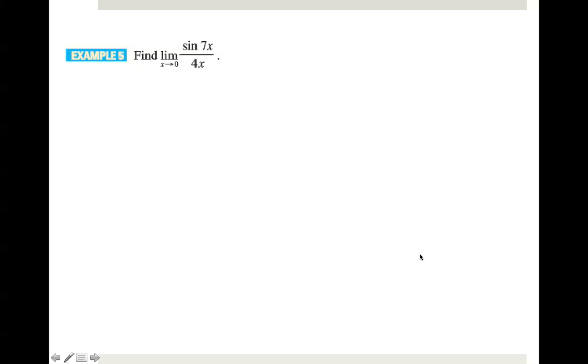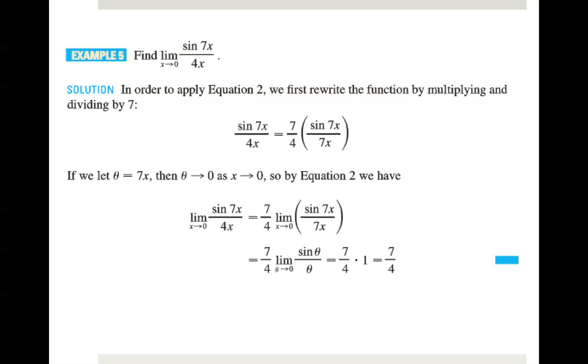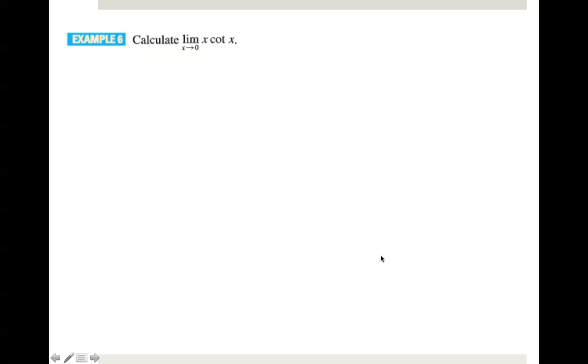Find the limit as h approaches 0 of sine 7x divided by 4x. In order to apply equation 2, we first rewrite the function by multiplying and dividing by 7. Then we're going to use theta equals 7x. Then theta approaches 0 as x approaches 0. So the equation we have is as follows. We can pull the 7 divided by 4 out front. We have the limit as x approaches 0 of sine 7x divided by 7x. When we get this like this, we can do sine theta divided by theta, which we know as theta approaches 0, sine theta divided by theta is 1. So we have a very easy solution to our problem, 7 fourths times 1 equals 7 fourths.